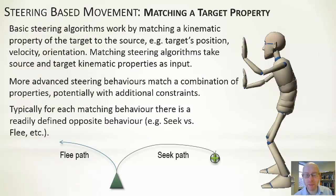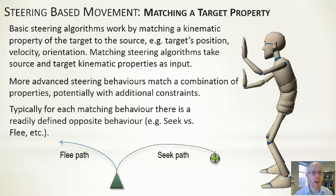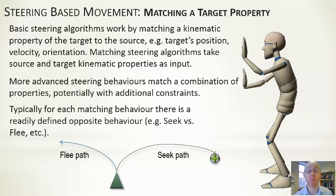The whole premise behind steering algorithms is about matching a target property. That property could be a position — you want your position to match another one — it could be a velocity, meaning your direction of travel and speed match some other target, or it could be an orientation mapping onto some defined orientation. All steering algorithms operate on matching a single property against some defined target. More advanced ones look at mapping more than one property or introduce constraints, such as how cars with constrained motion can be implemented, which we'll look at in the next lecture. Similar to kinematic algorithms, these generally come in pairs — a seek behavior and a corresponding flee behavior which is the opposite.